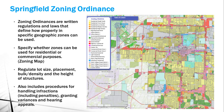Most of the property along Glenstone is considered highway commercial because Glenstone is considered a highway. Then it goes on into commercial services, manufacturing, industrial, and so on. It's color coded so you can see how it lays out on the map.